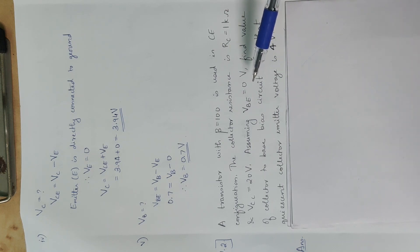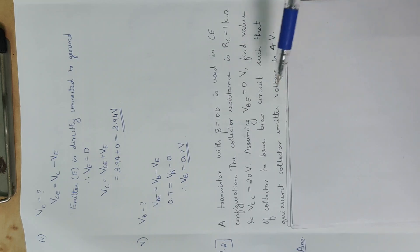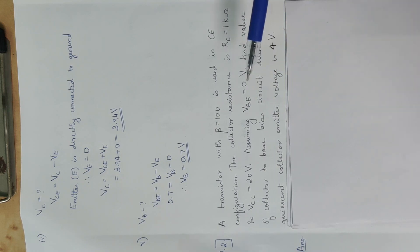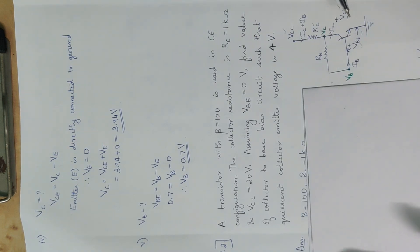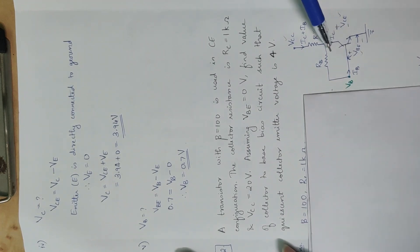We assume VBE value is 0V. We have to find the value of the collector-to-base bias circuit such that the collector-emitter voltage VCE is 4V. Now our circuit is here — we will use this circuit with a collector resistance.